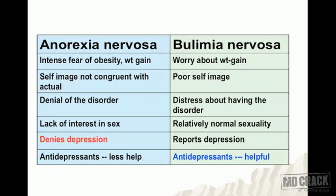Psychologically, anorexia nervosa patients have an intense fear of obesity, while bulimia patients worry about weight gain. In anorexia, self-image is incongruent with actual image; in bulimia, patients have poor self-image. Anorexia patients often deny the disorder, while bulimia patients show distress about it. Anorexia patients lack interest in sex; bulimia patients have relatively normal sexuality. Anorexia patients deny depression — hence antidepressants are less helpful — while bulimia patients report depression and respond well to antidepressant treatment.